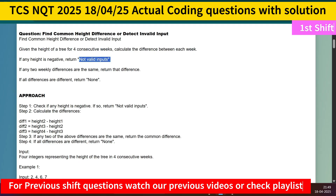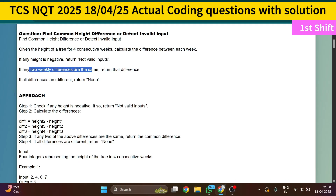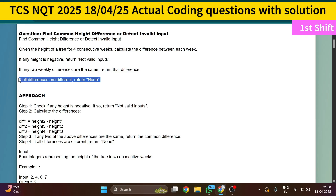If any two weekly differences are the same, you have to return that difference as output. If all the differences are different, you have to print 'none' to the console. This was a pretty easy question if you were able to crack the logic.